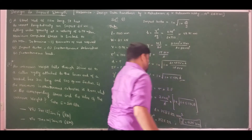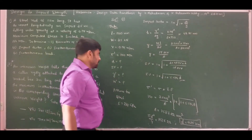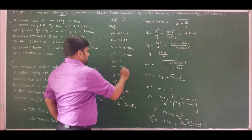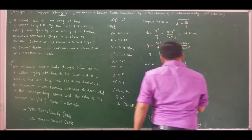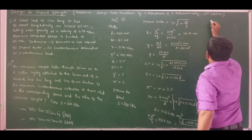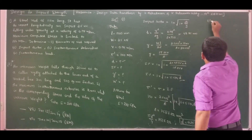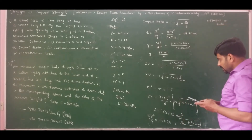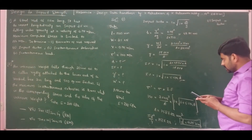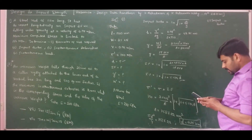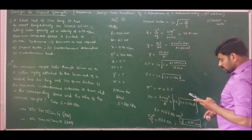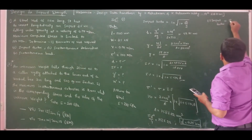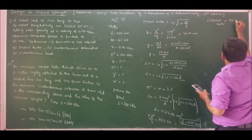Therefore the diameter of the rod required is 44.95 mm. Now the impact factor can be directly solved since we know the impact factor in terms of area. Substituting area equals 1587.22 into the impact factor expression, impact factor equals 1 plus the square root of 1 plus 5.594 into 1587.22, giving an impact factor of 95.23.